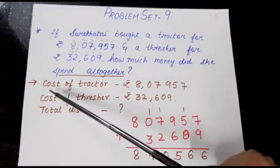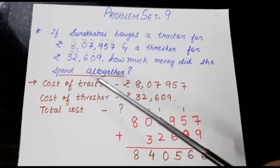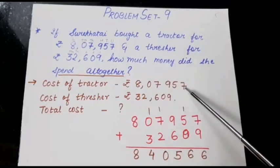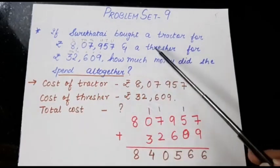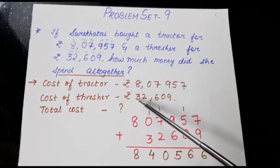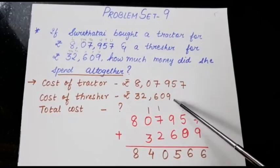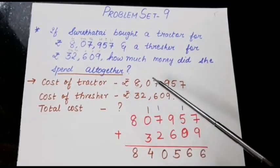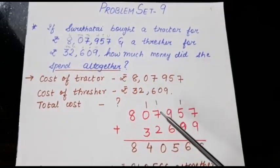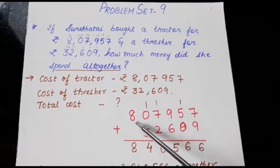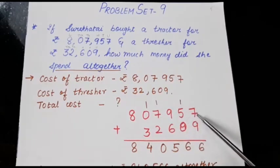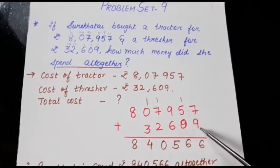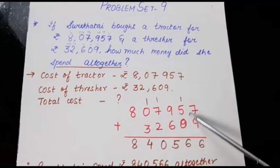So we will first write the first statement that is cost of tractor Rs. 8,07,957. Cost of thresher which is given here Rs. 32,609. Total cost - what was the total cost? That we have to find. So we will have to add both these things. First number is 807957 and here we will write the second number 32609. We will add both these things.